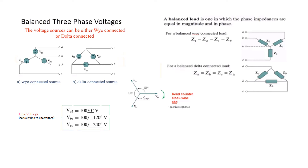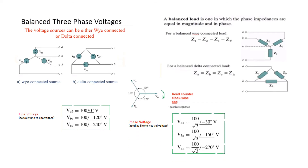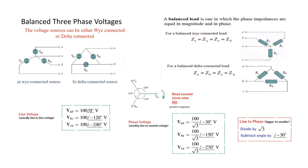Line voltage is line-to-line voltage, such as from A to B, while phase voltage is from A to neutral N. Line voltage is greater than phase voltage. To convert from line voltage to phase voltage, divide the magnitude by root 3 and subtract 30 degrees from the angle. So 0 becomes minus 30, minus 120 becomes minus 150, and minus 240 becomes minus 270, with magnitude divided by root 3 in all cases.